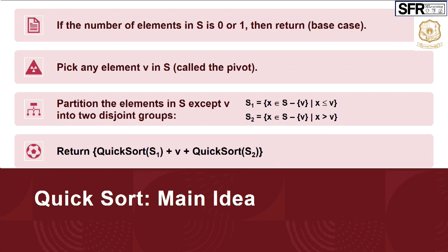After dividing into two disjoint groups, we have to apply quicksort recursively on S1 as well as S2. Partitioning is phase 1. After phase 1, we have to merge the results. If we merge it back — that is the process of conquering — we will get the list sorted. This is the main idea behind quicksorting.